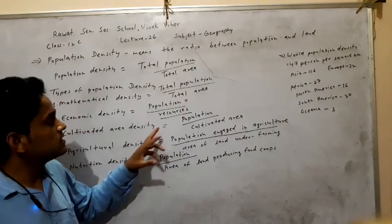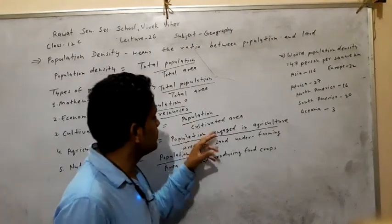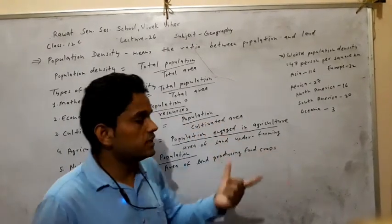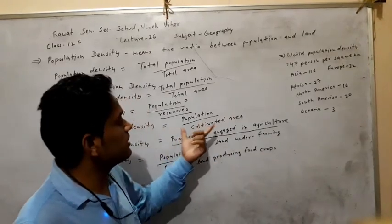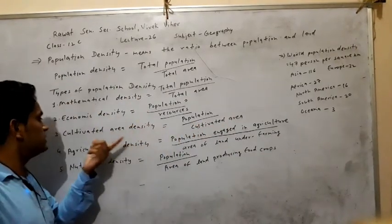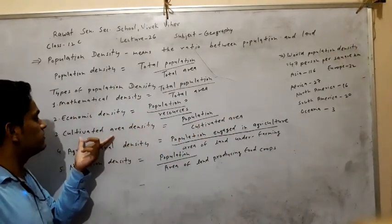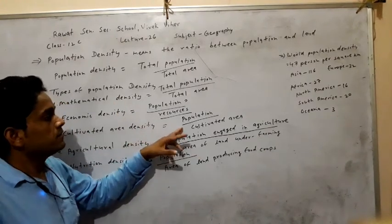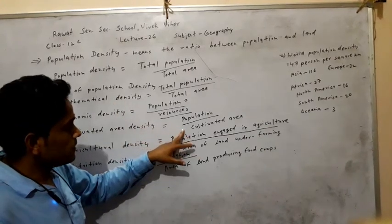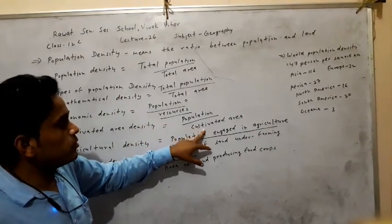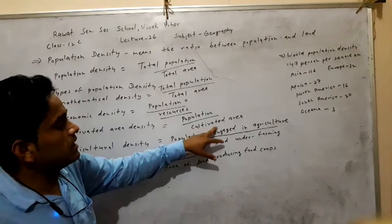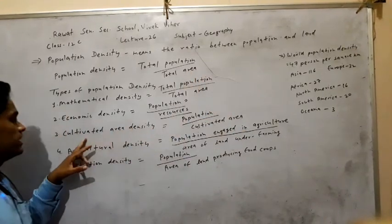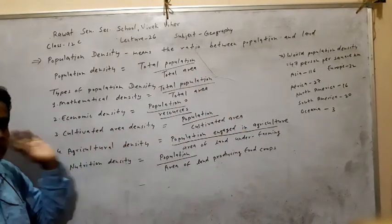So the study of the ratio between total population and cultivated region is called cultivated area density. The formula is: population divided by cultivated area.